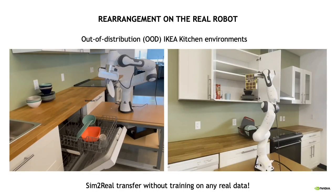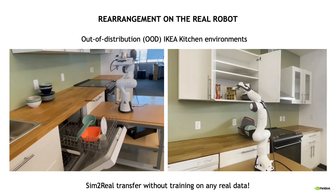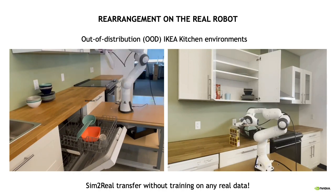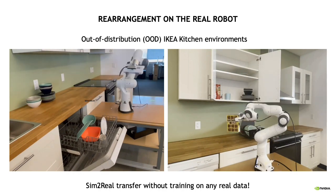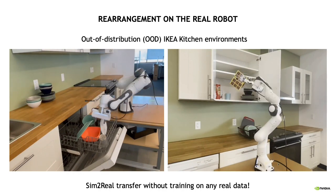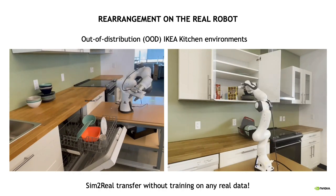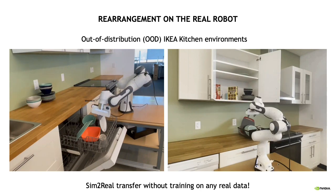The Cabinet model also generalizes to out-of-distribution environments, such as the shelf and the dishwasher, in an actual IKEA kitchen setup as shown here.